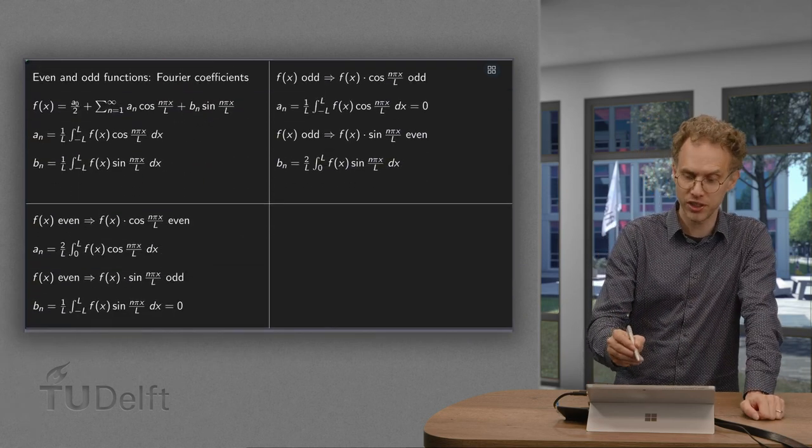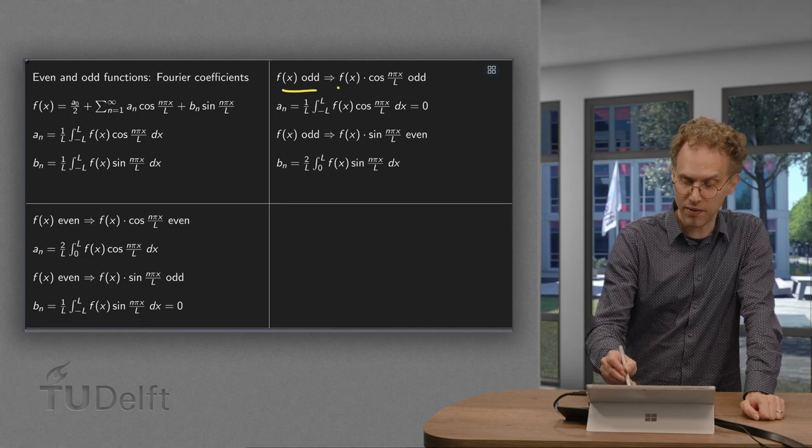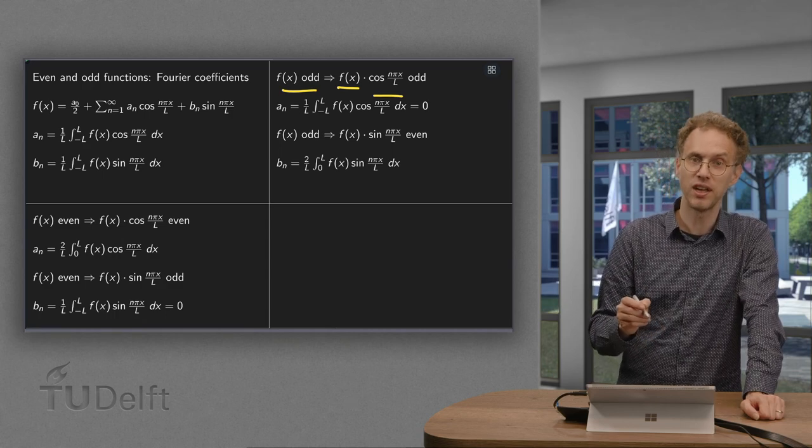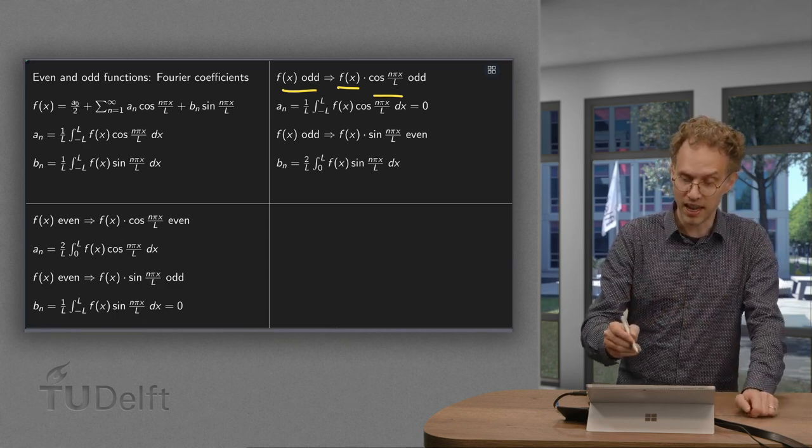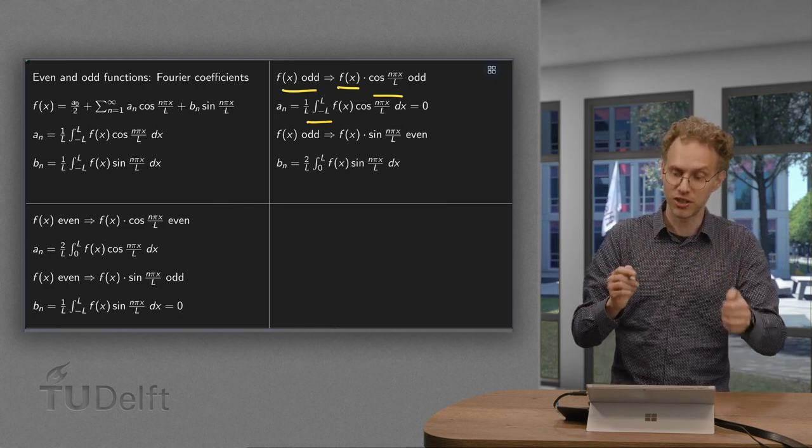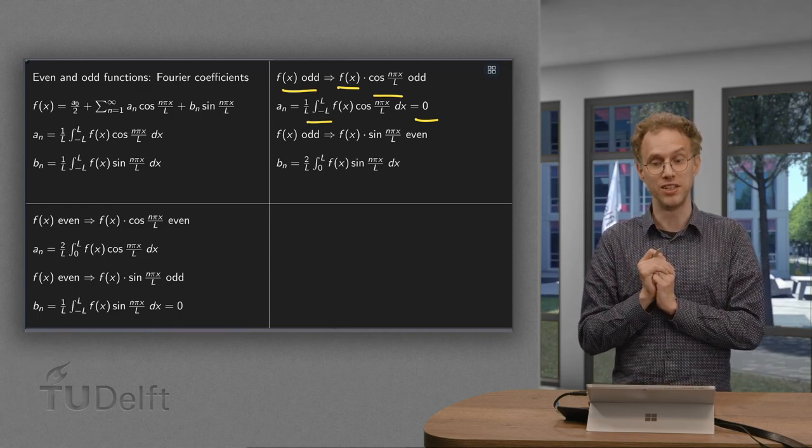Now what about the odd functions? If f of x is odd, then f times the cosine is also odd because the cosine is an even function. And now if we compute the a_n we have to integrate from minus l to l an odd function. Such integrals are always 0. So all a_n are automatically 0.